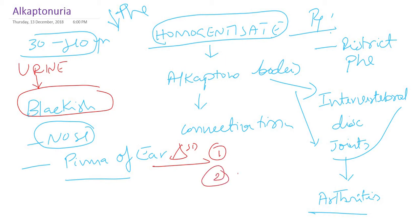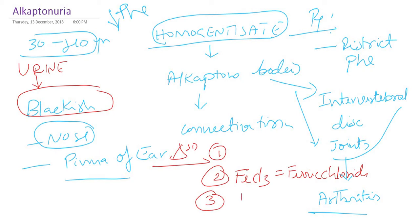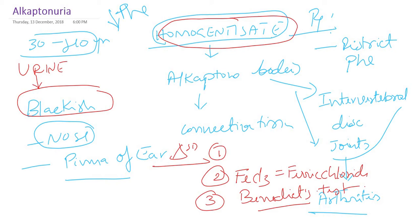Another diagnostic test is the ferric chloride test, similar to phenylketonuria, which will give a positive result. Also, since homogentisic acid is a strong reducing agent, the Benedict test will also be positive. Many think the Benedict test is positive only for glucose, but it is actually a test for reducing substances. Some sugars are reducing sugars and give a positive result, as does excess vitamin C. Those suffering from alkaptonuria will also give a positive Benedict test because their urine contains the reducing substance homogentisic acid.